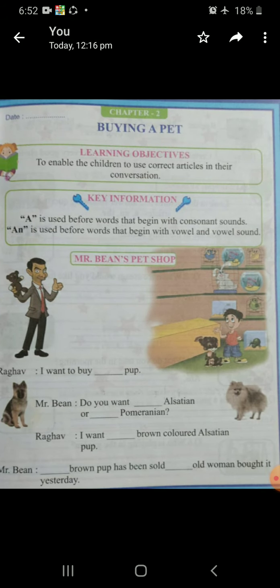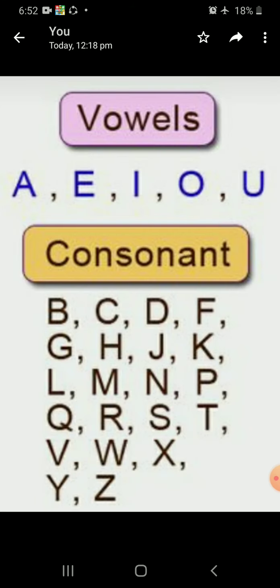See, here we have 26 alphabets. In this you can see A, E, I, O, U are of green color. These all are vowels. And those which are of red color like B, C, D, F, G, H — they all are consonants. It means there are 5 vowels and 21 consonants. We have 26 alphabets — 5 are vowel sounds and the others are consonants. Understood?